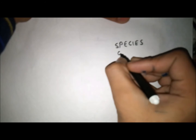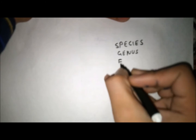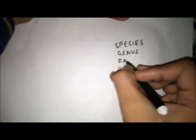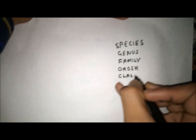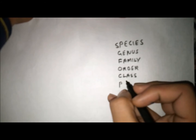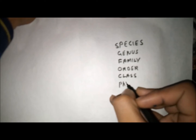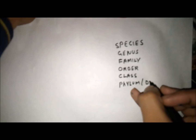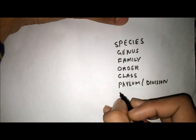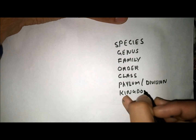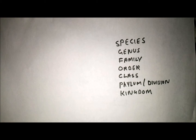The particular order is: species, genus, family, order, class, division. This is the order that we need to remember, but we often make mistakes with it.